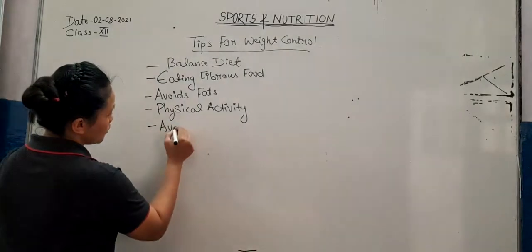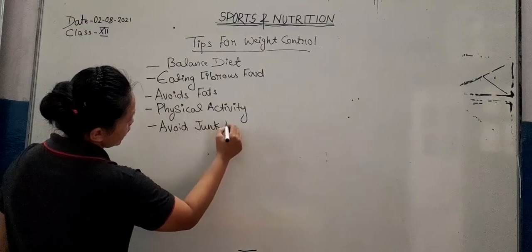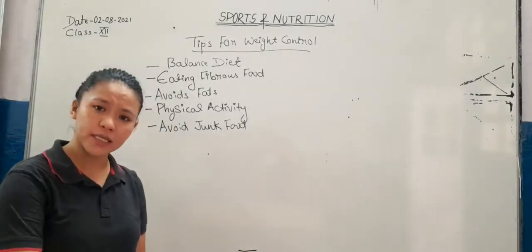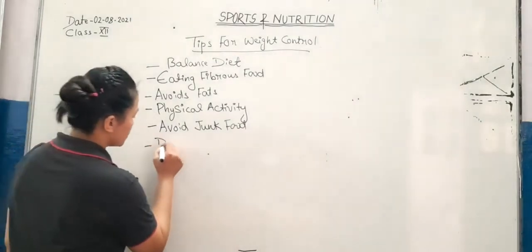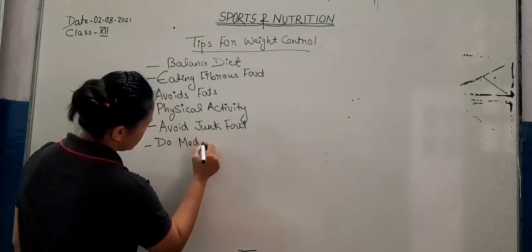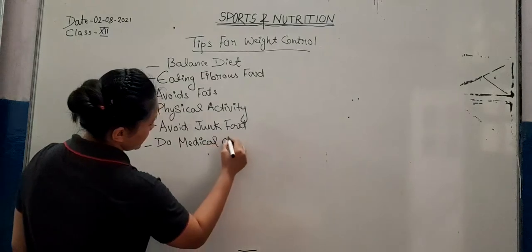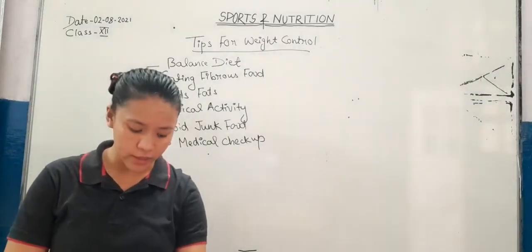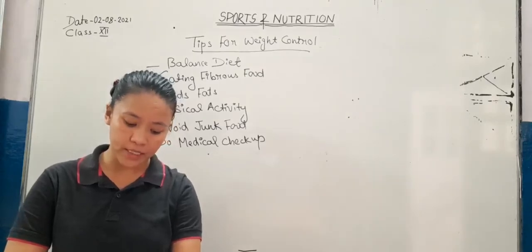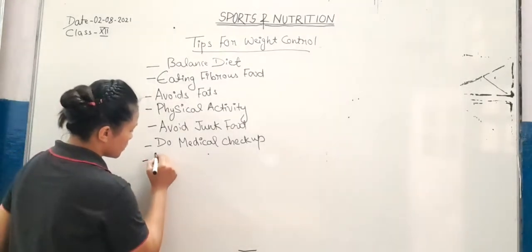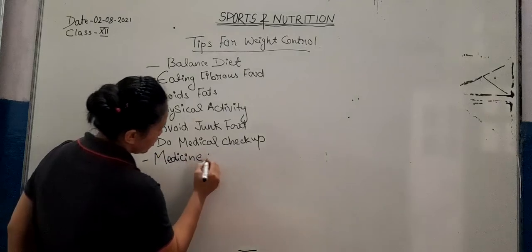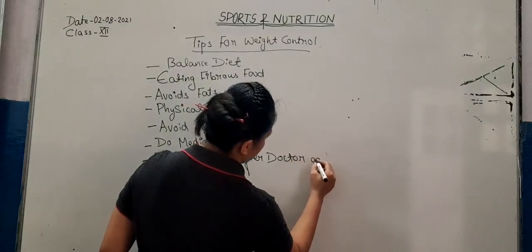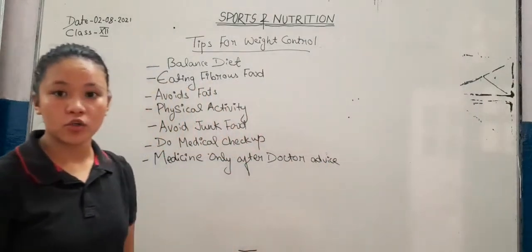Avoid junk food like cold drinks, pizza, Pepsi, burger, pasta, etc. Also do a medical checkup — at least once a month, do a regular medical checkup; after every six months. Regarding medicine — only take medicine after a doctor's advice. Never take any medicine without a doctor's advice.